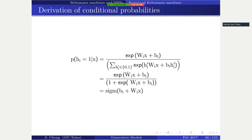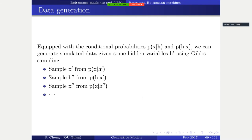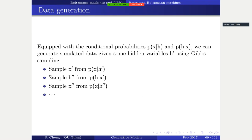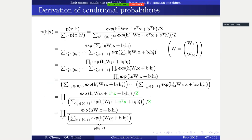The conditional probability of a hidden unit given the visible layers (bold x) is given by a sigmoid function. In terms of data generation, we use Gibbs sampling.